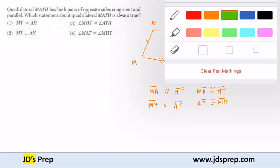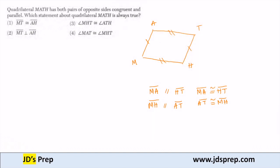So the first one that we have to check is MT congruent to AH. MT and AH are diagonals, right? Here's MT and here's AH. Now the fact that they're congruent is only guaranteed if this is a square. So that's not always going to be true. So we can eliminate one.